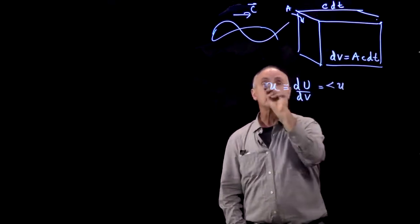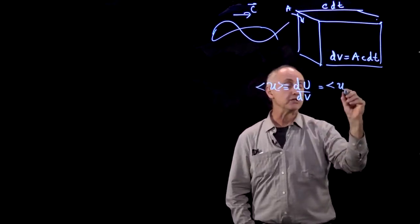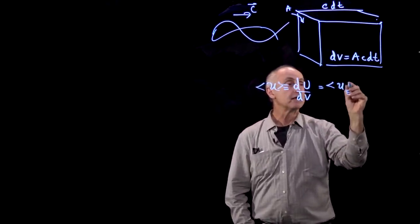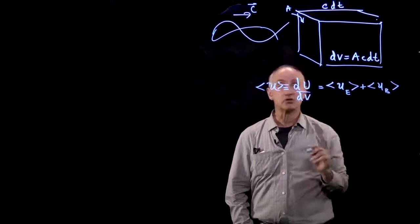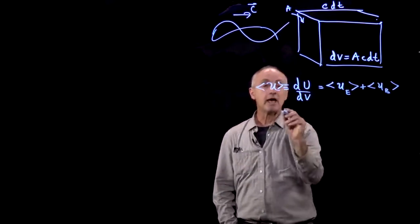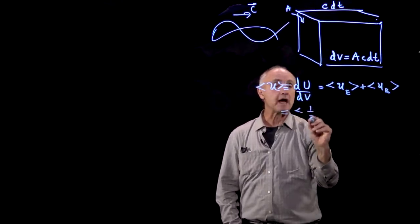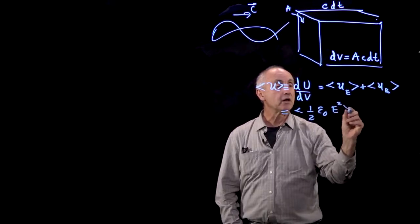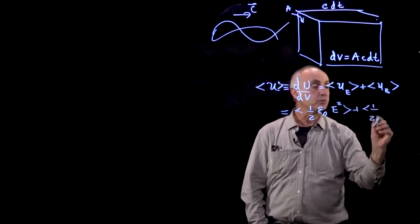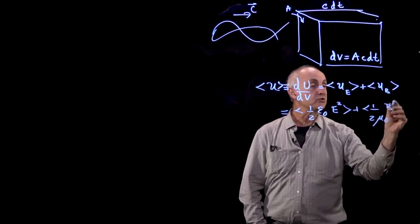For time averaging, we'll make this a little time average energy density. This is the time average energy density stored in the electric field plus the time average energy density stored in the magnetic field. By definition, that was one half epsilon naught times E squared plus one over two mu naught times B squared.